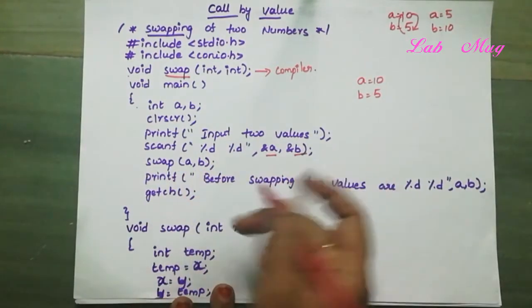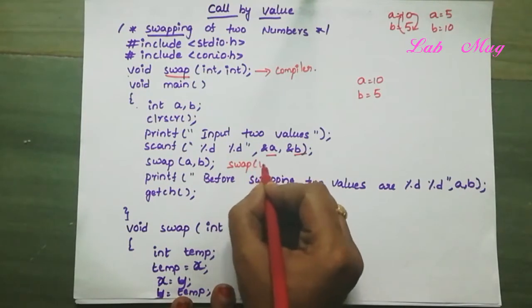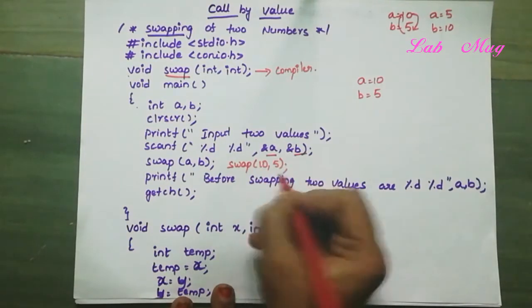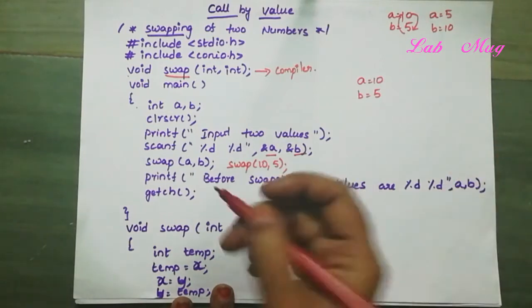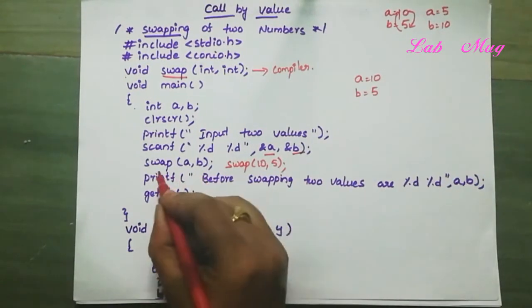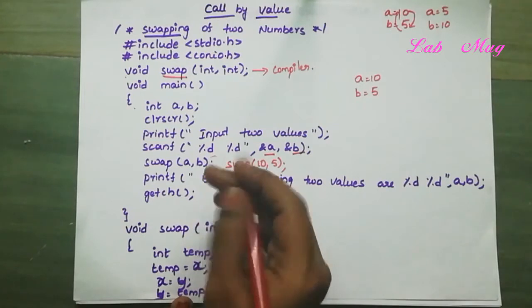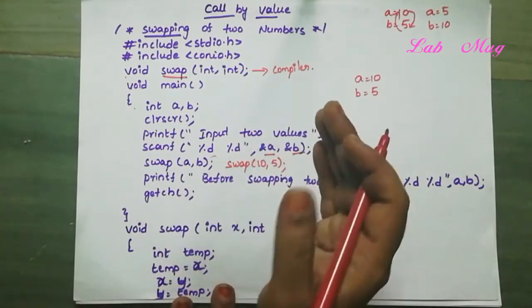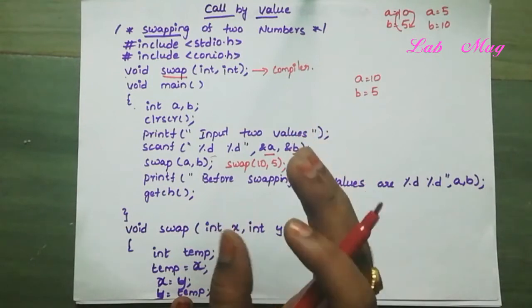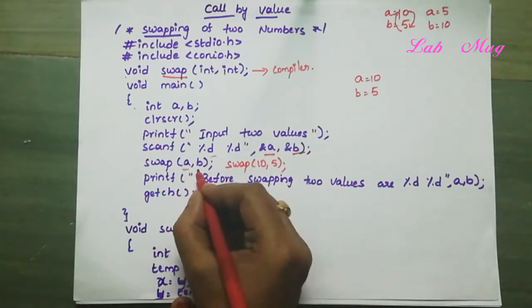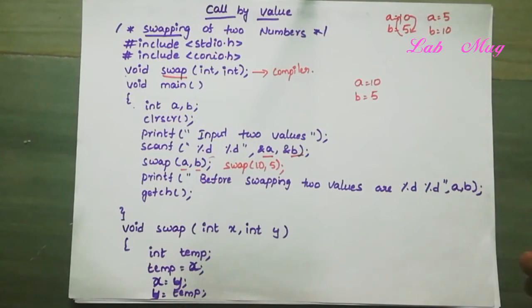We call swap(a, b), which means swap(10, 5). This calls the function. A function calling statement ends with a semicolon. When we pass values with a semicolon at the end, that is the function calling statement. The values passed are called arguments.